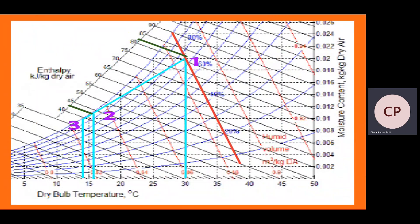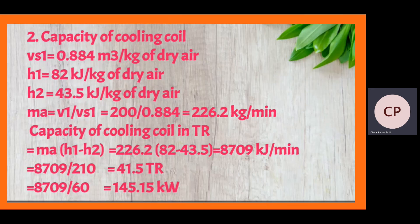Now we find the enthalpy at points 1 and 2. The enthalpy lines are inclined lines on the chart, given in kJ per kilogram of dry air. Drawing a parallel line through point 1 gives H1 = 82 kJ/kg of dry air. Drawing a parallel line through point 2 gives H2 = 43.5 kJ/kg of dry air.